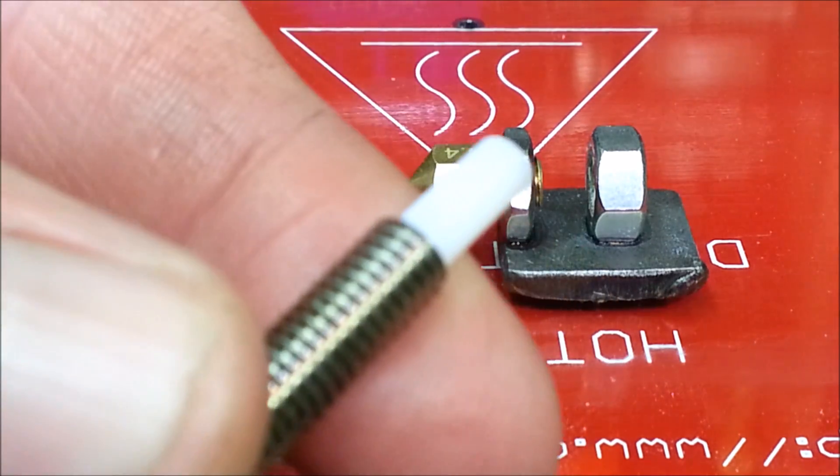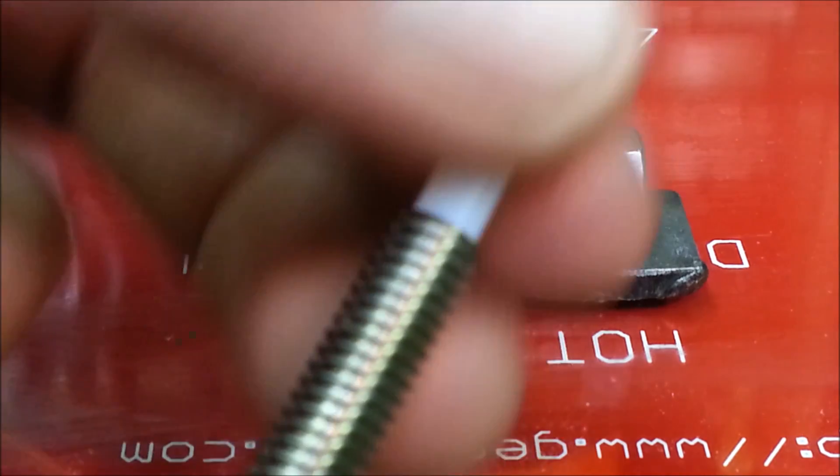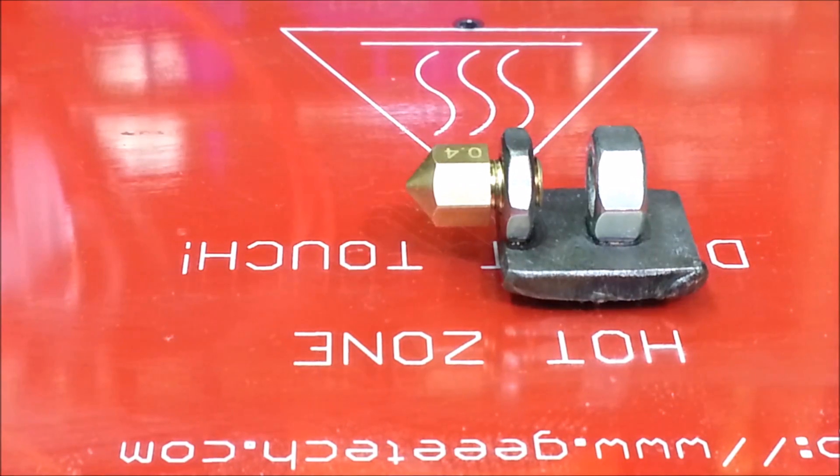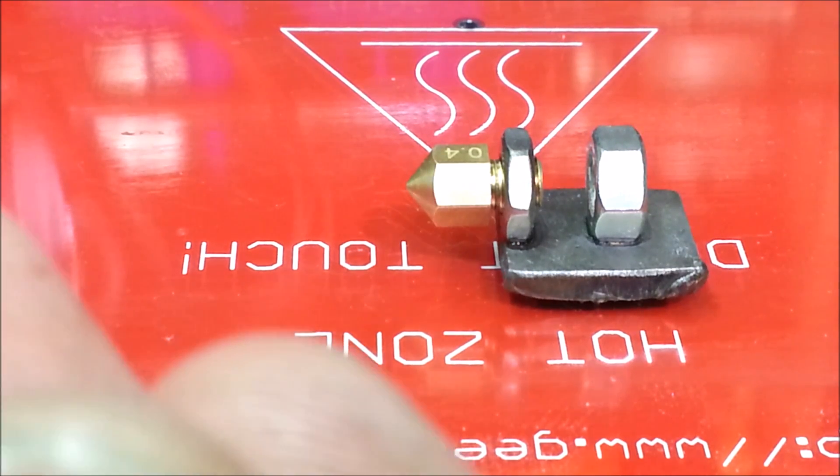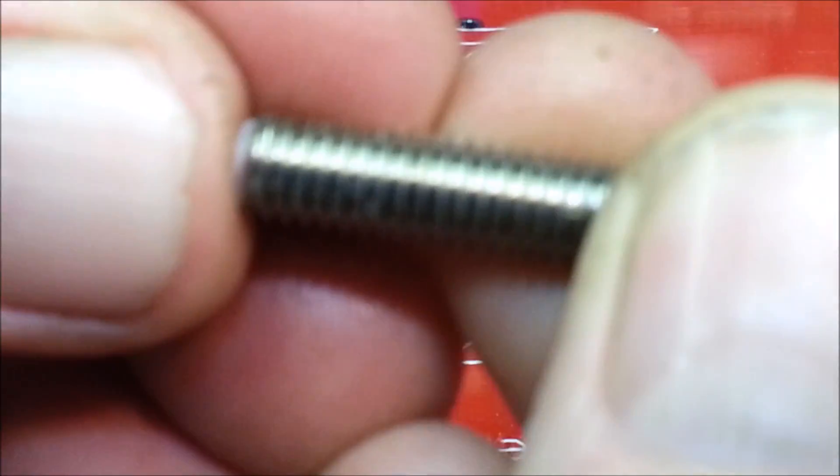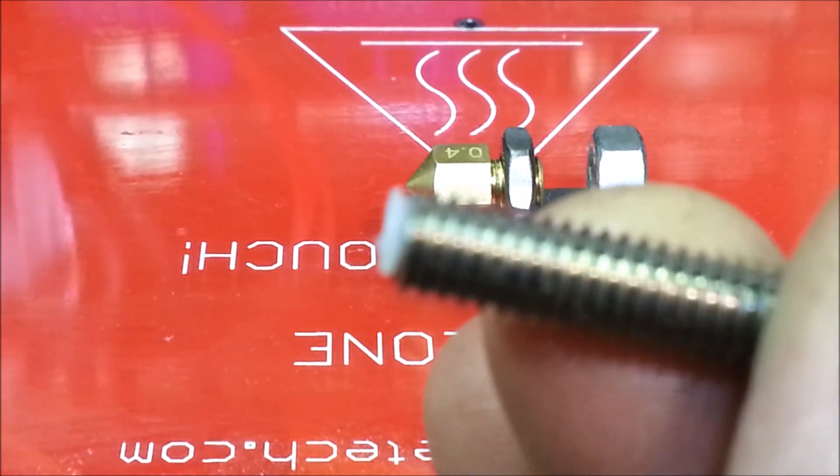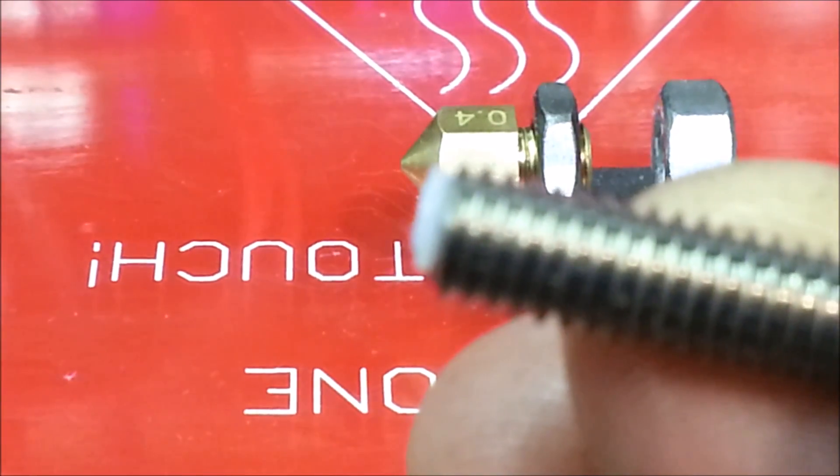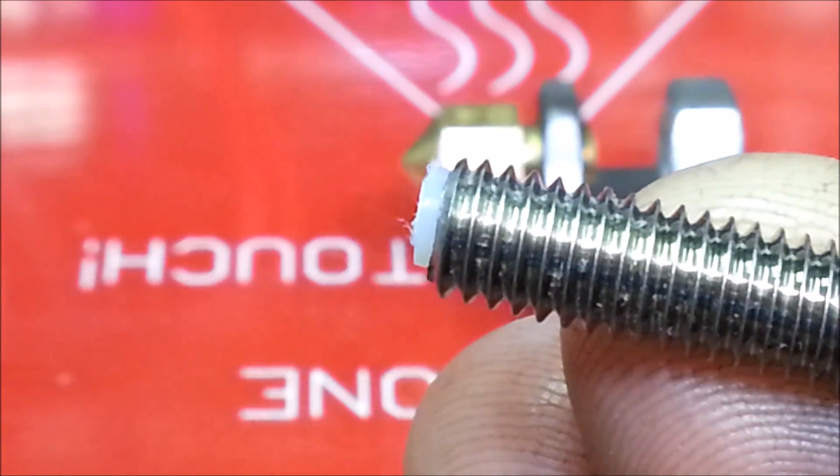What I did is I pushed out the one that came with the new nozzle throat and then I cut a piece of the tubing. And see how I just cut it so it's a little bit past the threads.